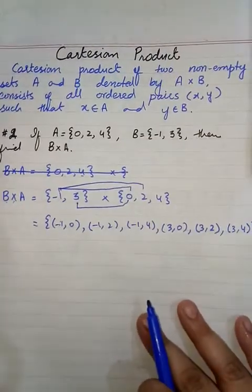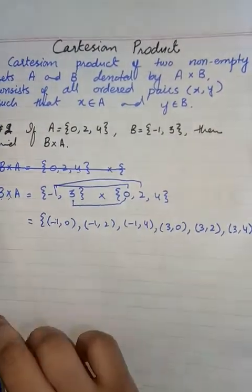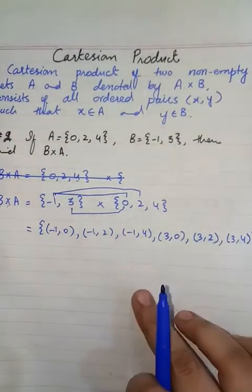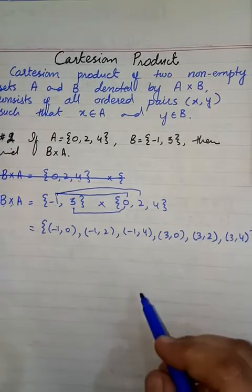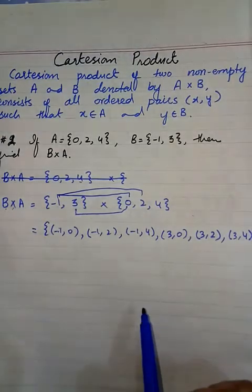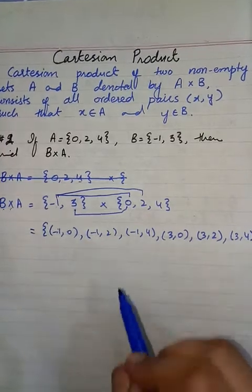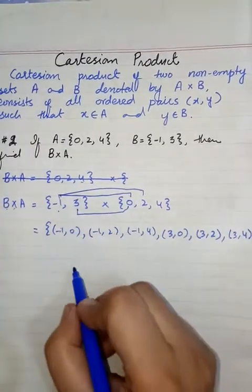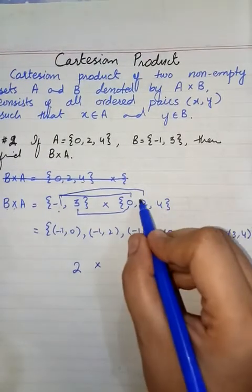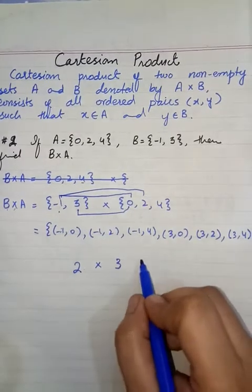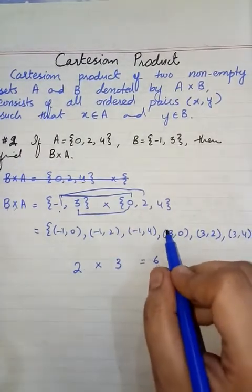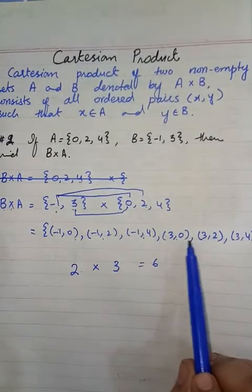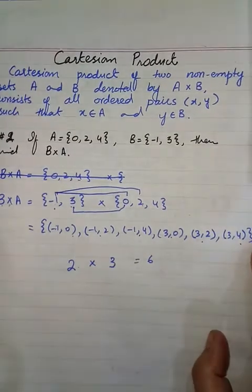Now remaining parts you have to do by yourself. These ordered pairs must be enclosed in the curly brackets. Curly bracket at start and curly bracket at end. Remaining parts are A multiply B, A multiply A and B multiply B. And how can we say that we have found all the ordered pairs or the multiplication is complete now? You have to see the number of elements in first set. Number of elements in first set is 2. Number of elements in second set, 1, 2, 3. Multiply this, 2 times 3 is 6. It means there should be 6 ordered pairs in this multiplication of these two sets. Now let's check, are there 6 ordered pairs? 1, 2, 3, 4, 5 and 6. And all the ordered pairs must be enclosed in the curly brackets.